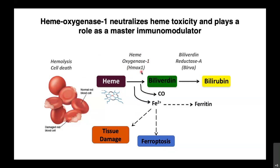One of the main genes triggered and activated in this response is HO-1, which is an inducible enzyme that will be expressed in response mostly to its substrate and many other stimuli. HO-1 will break down heme in a reaction that ultimately leads to the formation of bilirubin, carbon monoxide, and free iron, which will be transported by neutralizing proteins including ferritin or transferrin to prevent ferroptosis and cell death.